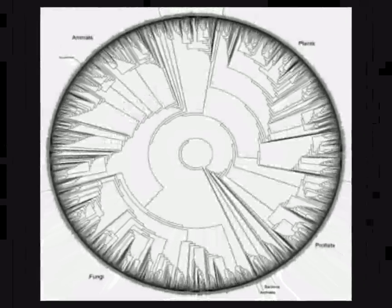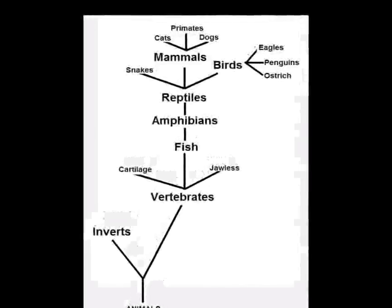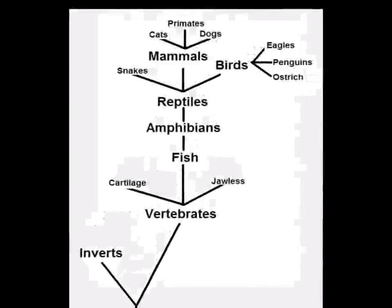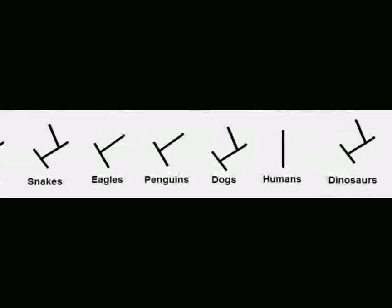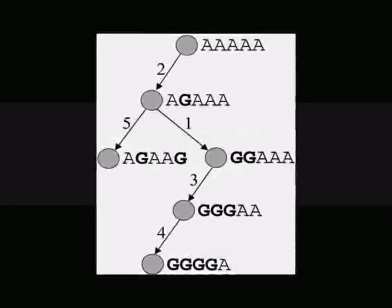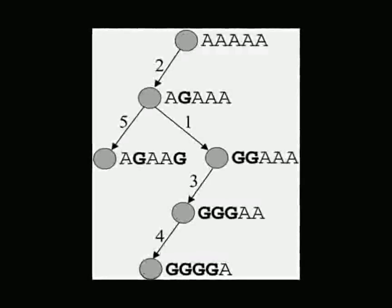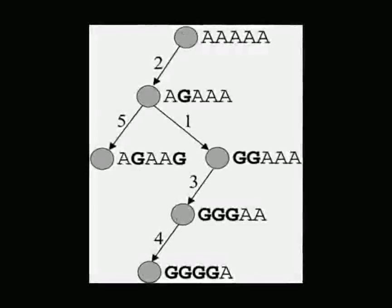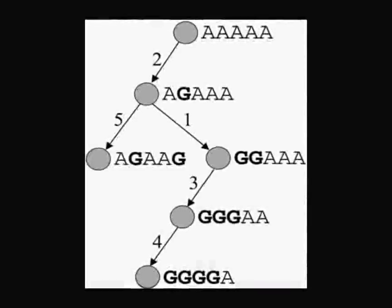Hello everyone. This video is going to take a look at exactly what creationism says and what predictions can be made from it as a scientific theory. We'll also be examining evolution, the evidence, and exactly which theory the evidence sides with. At the end, I'll be discussing why creationism is no longer a scientific theory given the evidence. I stumbled upon images like these several weeks ago, and they're very useful in this discussion as they clearly outline what creationism and evolution both say, and from these images we can make predictions about what would be true if either theory were correct.